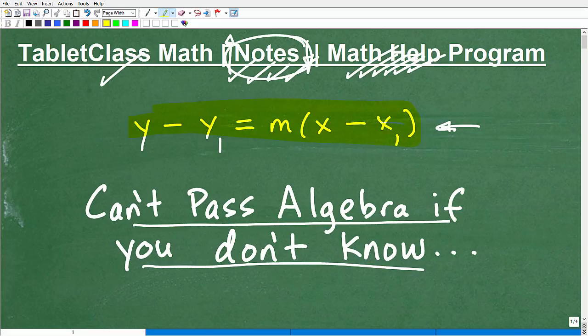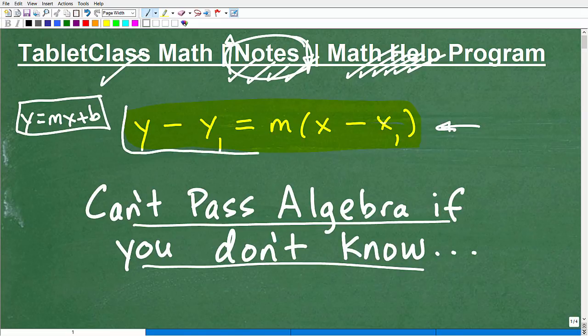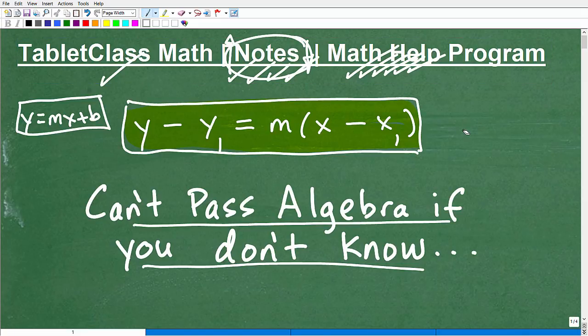Okay. So here is the equation we're going to be talking about. Or formula, rather. And what is this? Any guesses out there? All right. So this is the point-slope formula. And this formula here, along with this formula, y equals mx plus b, which everybody kind of knows. And this is the slope-intercept. This is the point-slope formula.